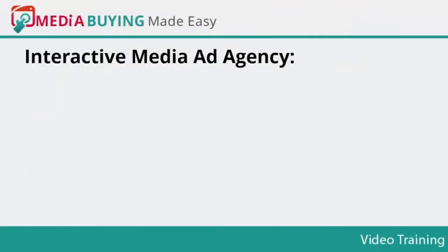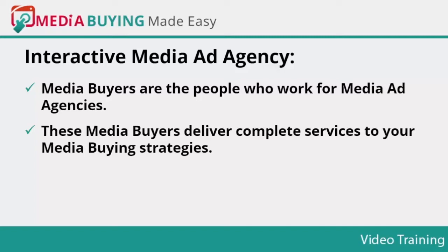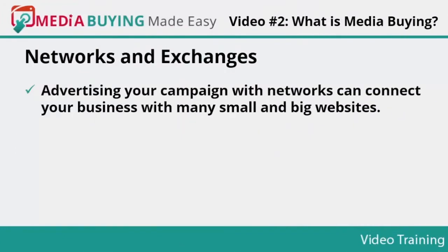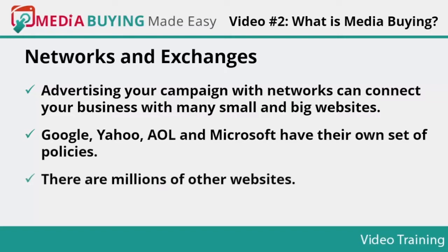Interactive media ad agency: media buyers are the people who work for media ad agencies. These media buyers deliver complete services to your media buying strategies — they assist you in designing banner ads, choosing the websites to buy, serving the ads, and analyzing your results. Networks and exchanges: advertising your campaign with networks can connect your business with many small and big websites. The networks market their affiliate websites' ad space to sell on CPM, CPC, and CPA basis. Google, Yahoo, AOL, and Microsoft have their own set of policies, and there are millions of other websites such as CPX Interactive, Value Click, First Media, and Ad Bright.